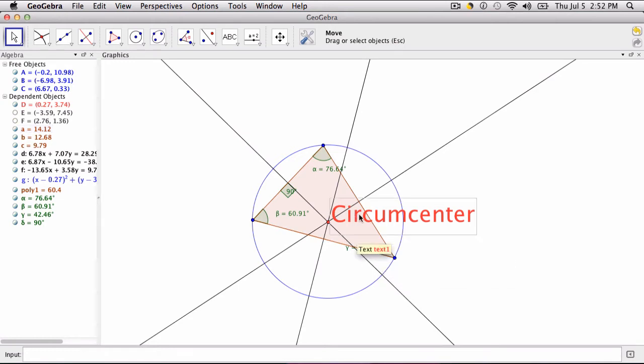Or you can make it red to enforce the idea that the center of the circum-circle is always the center of the triangle.